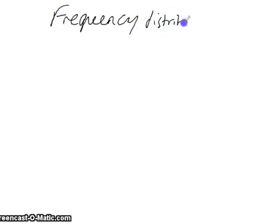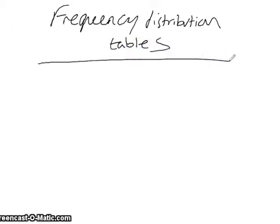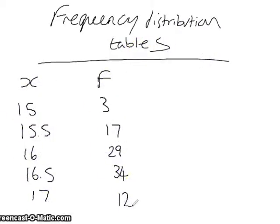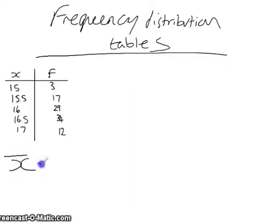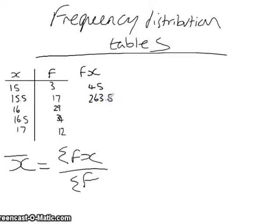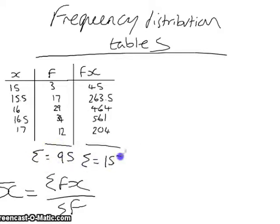We can calculate the mean, median, and mode for data in a frequency distribution table. The mean is calculated using the formula sigma fx over sigma f, where fx is the frequency multiplied by x. So we do 1532.5 over 95, which means our mean is 16.18.